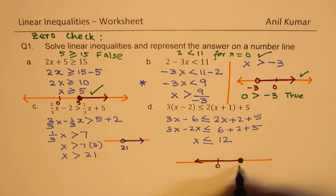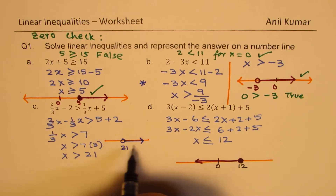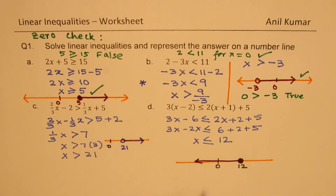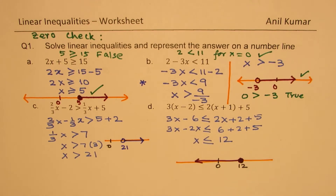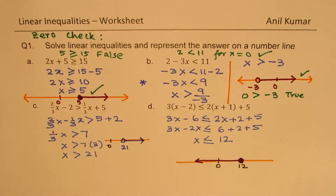Let's say 0 is somewhere here and 12 is marked. You can do a 0-check to verify: substitute x=0 to confirm whether 0 should or should not be in your solution, helping you catch any errors in your answer.